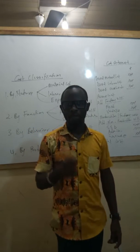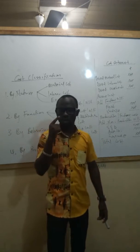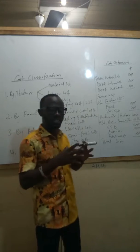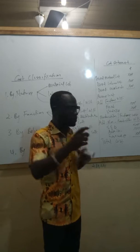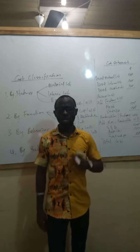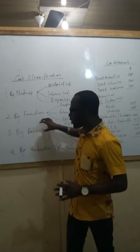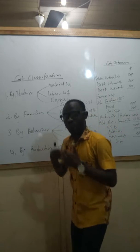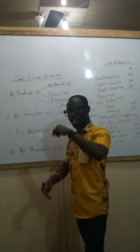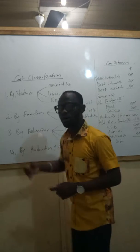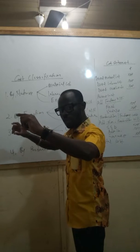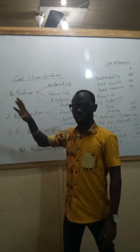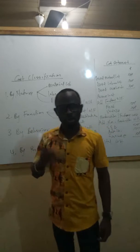Fixed cost remains the same irrespective of the output level. This is very important because when you are doing absorption costing, marginal costing, and activity-based costing, you will be dealing with this, especially when absorbing fixed overheads. The same idea carries forward in standard costing and various analyses. When absorbing fixed overheads, the fixed overheads added into the prime cost would not be based on the actual unit, but on the budgeted unit. We will get into that later in the profit statement.